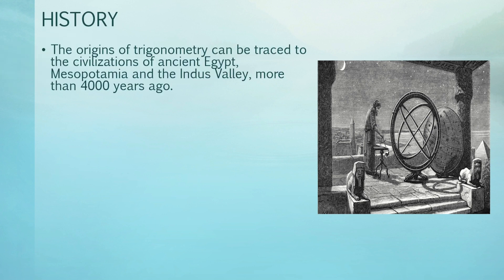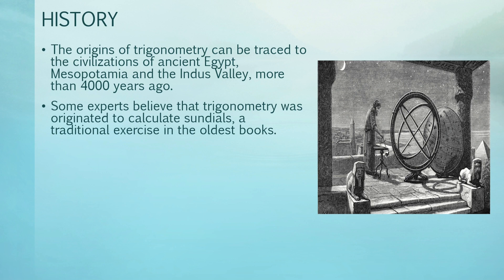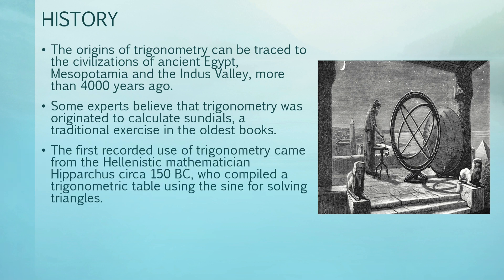The origins of trigonometry can be traced to the civilizations of ancient Egypt, Mesopotamia, and the Indus Valley more than 4,000 years ago. Some experts believe that trigonometry was originated to calculate sundials, a traditional exercise in the oldest books. The first recorded use of trigonometry came from the Hellenistic mathematician Hipparchus, circa 150 BC, who compiled a trigonometric table using the sine for solving triangles.